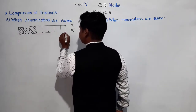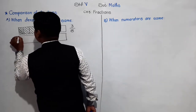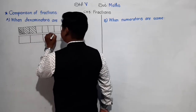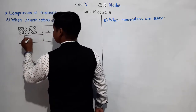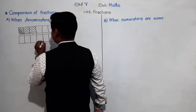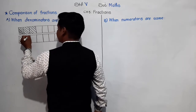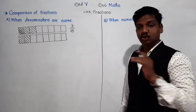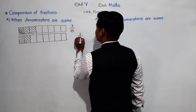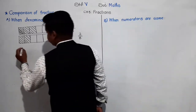Similarly, there is another same chocolate, again divided into eight equal parts, but this time two parts are shaded. So this can be represented as 2/8 — out of eight, two are shaded.